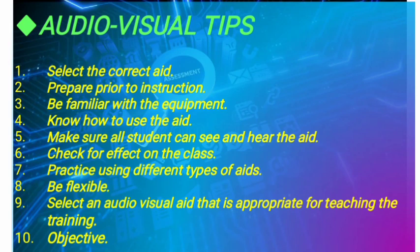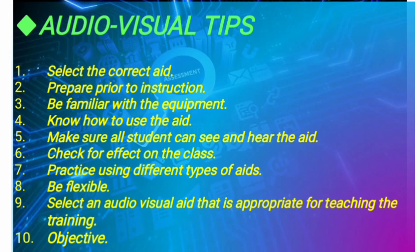In audiovisual aids, there are tips to follow: number one, select the correct aid; number two, prepare prior to instruction; number three, be familiar with the equipment; number four, know how to use the aids; number five, make sure all students can see and hear the aids; six, check for effect on the class; seven, practice using different types of aids; eight, be flexible; nine, select an audiovisual aid that is appropriate for teaching the training; ten, be objective.